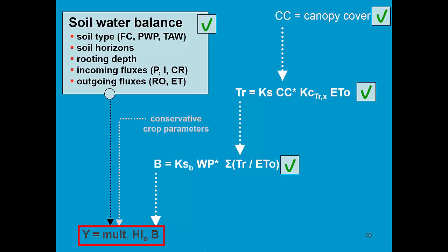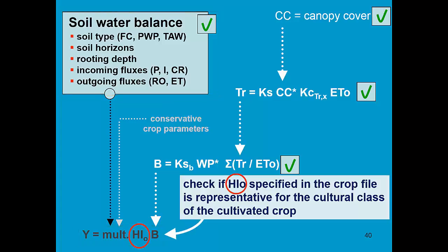This multiplier will increase or decrease the harvest index, but this is affected by conservative crop parameters, and of course it will work well if the soil water balance is properly checked. If the observed yield is still different from the simulated yield, then we might need to alter the reference harvest index as specified in the crop file.